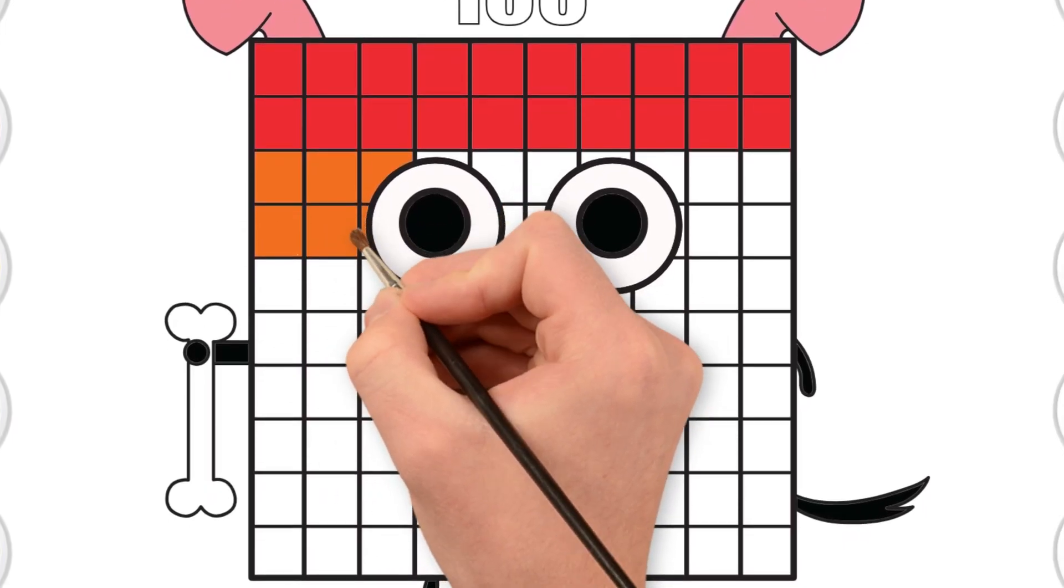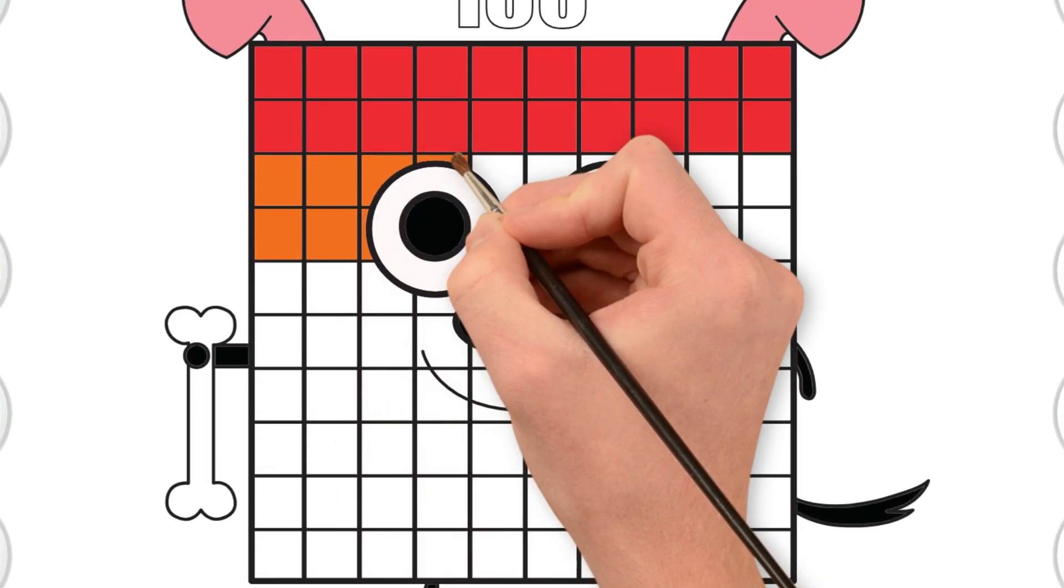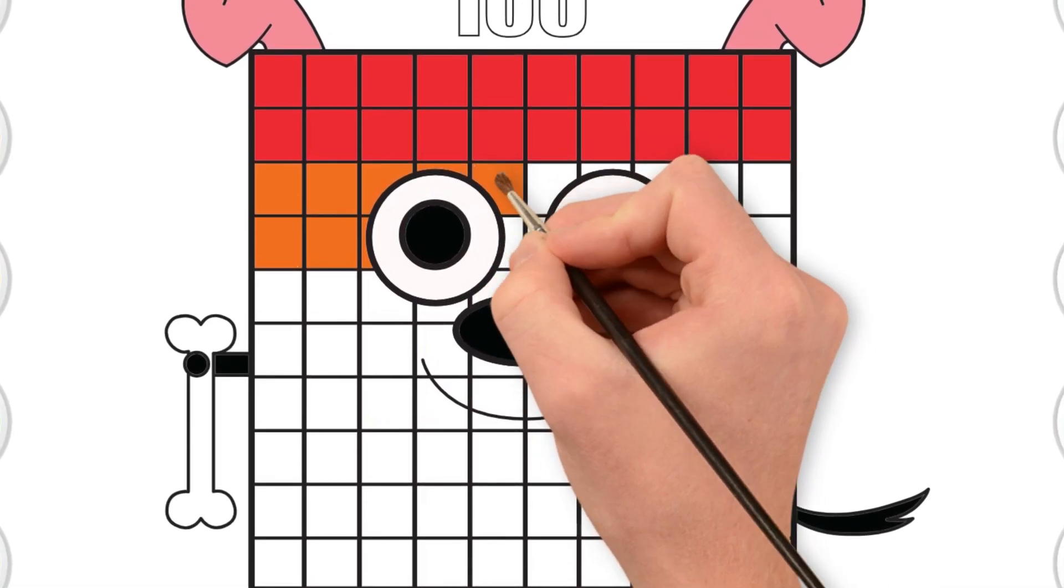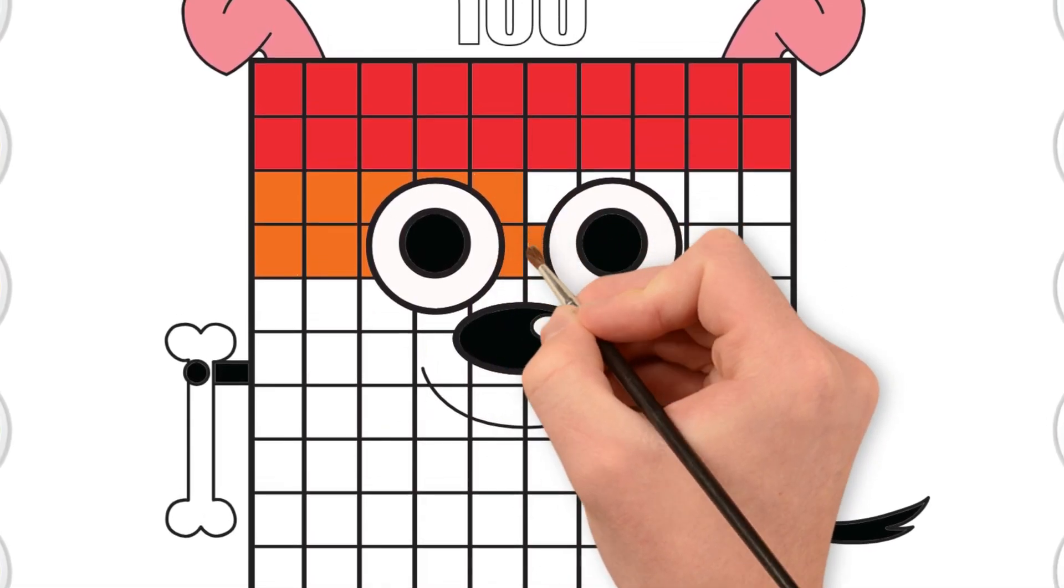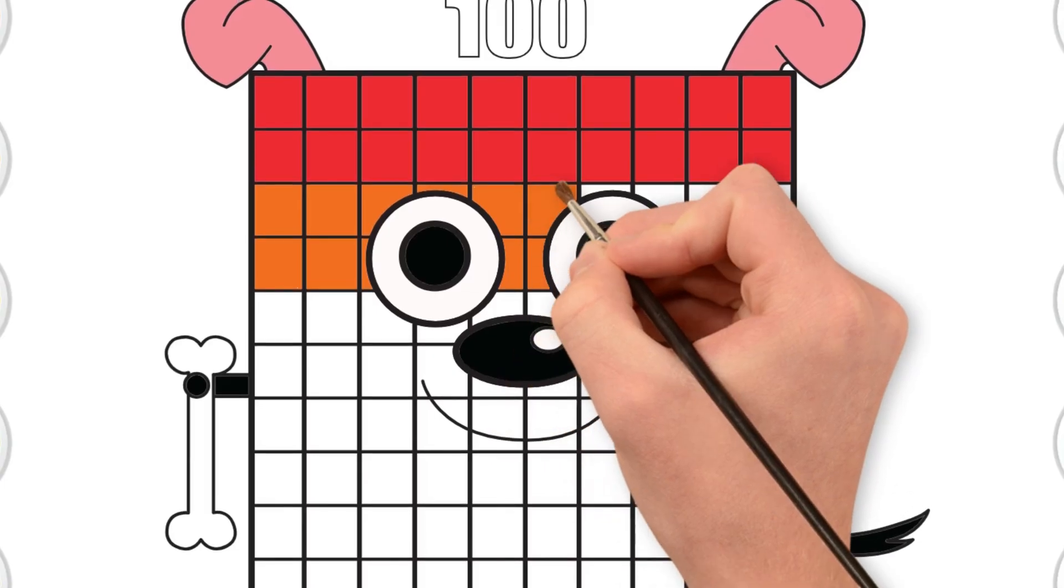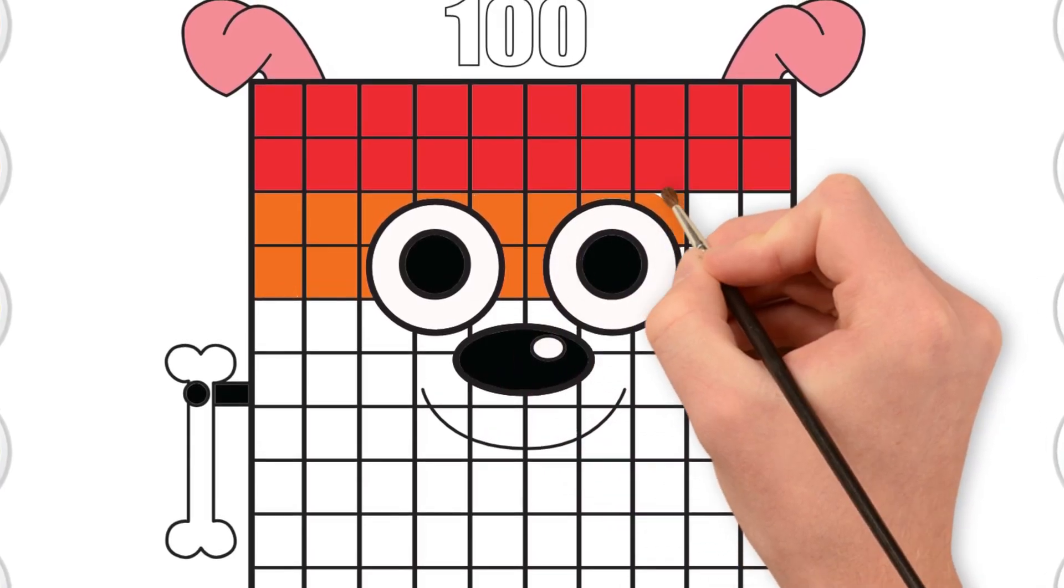Fill in the third and fourth rows with orange squares. Let's count by ten. Ten, twenty, thirty, forty. Which row has more? Two red rows or two orange rows? A trick question. They're the same.